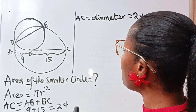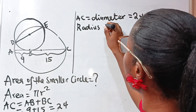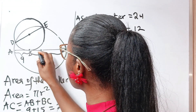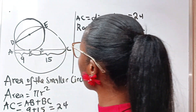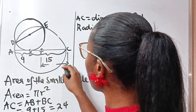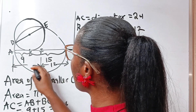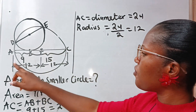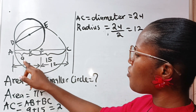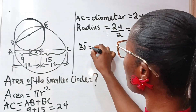Therefore, the radius of the bigger circle is 24 divided by 2, which is 12. If we call this center T, it means that TC is 12 and AT is 12 as well. Now, if AT is 12 and from A to B is 9, it means that BT is 12 minus 9, which is 3. So BT is equal to 3.